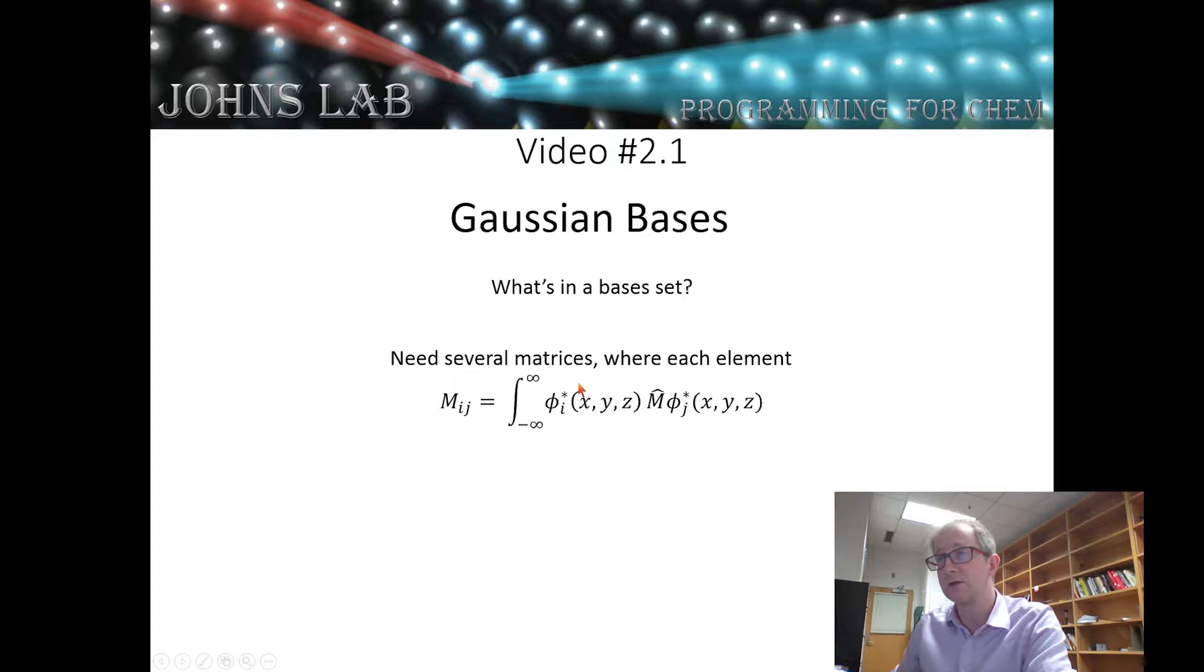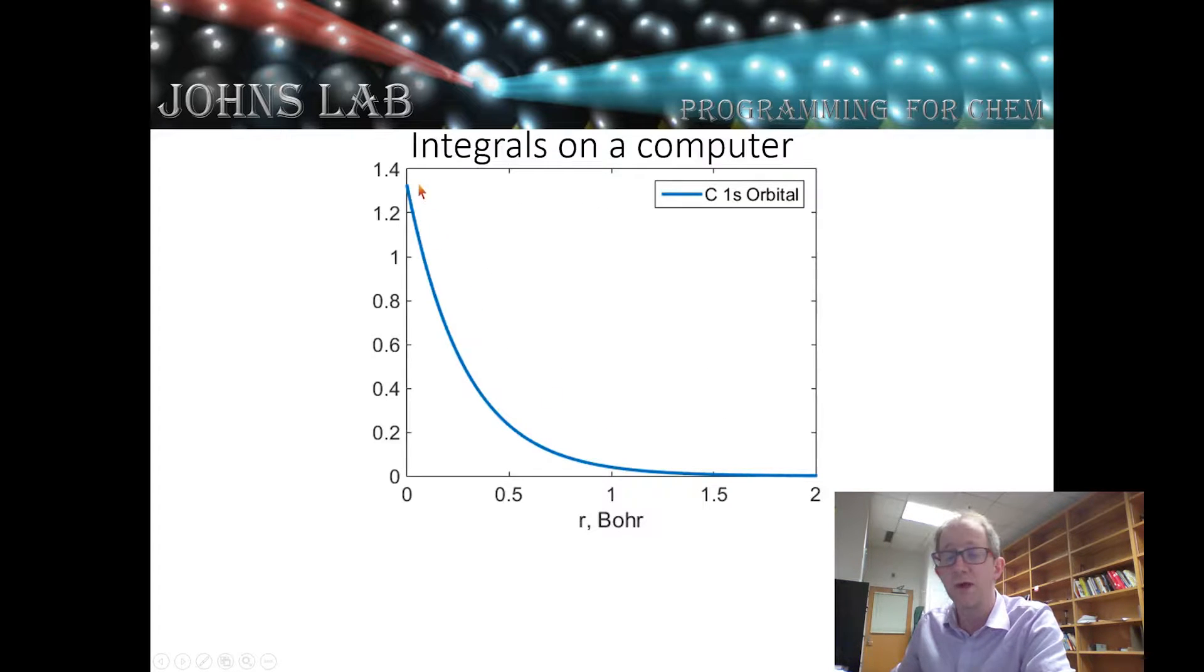The second way that I can take an integral on a computer is that I can take a function where I know what the anti-derivative is and then I can just evaluate the anti-derivative at both end points. So here I only have to evaluate a function twice but I need to know what the anti-derivative of the function I'm trying to evaluate is. This is much easier to implement and is much faster to implement.